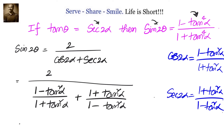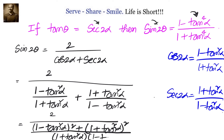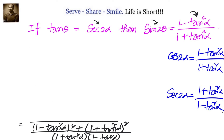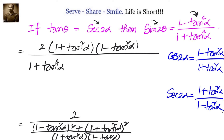Now let us take the LCM. In the denominator we will have (1 minus tan² α)² plus (1 plus tan² α)², divided by (1 plus tan² α)(1 minus tan² α). The numerator becomes 2 times (1 plus tan² α)(1 minus tan² α). Expanding the denominator: 1 plus tan⁴ α plus 1 plus tan⁴ α plus 2 tan² α, giving 2 plus 2 tan⁴ α plus 2 tan² α.